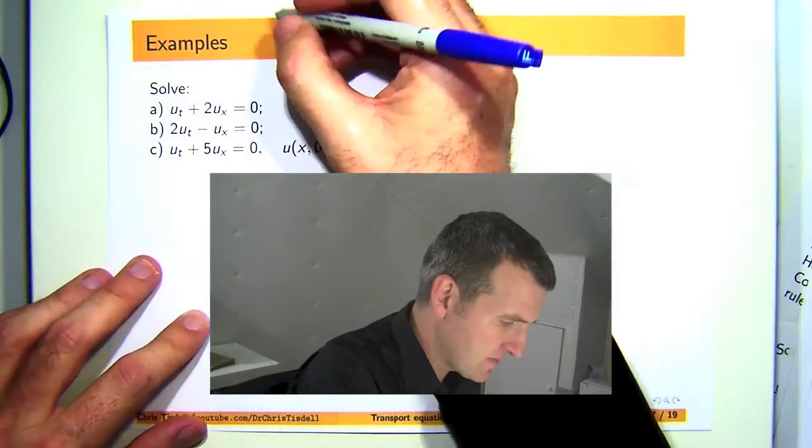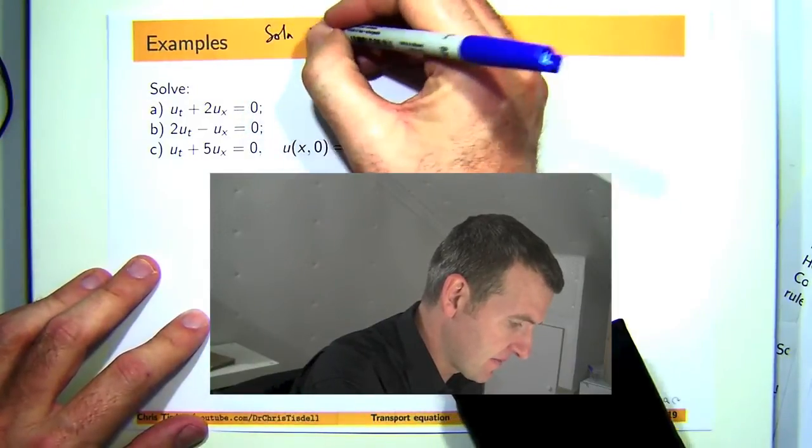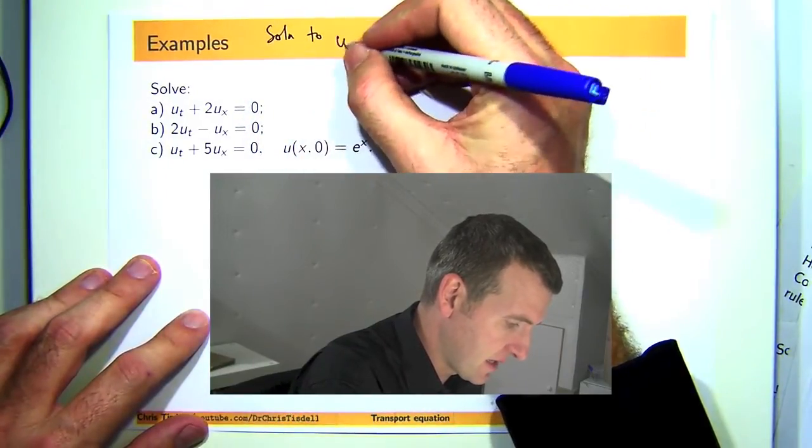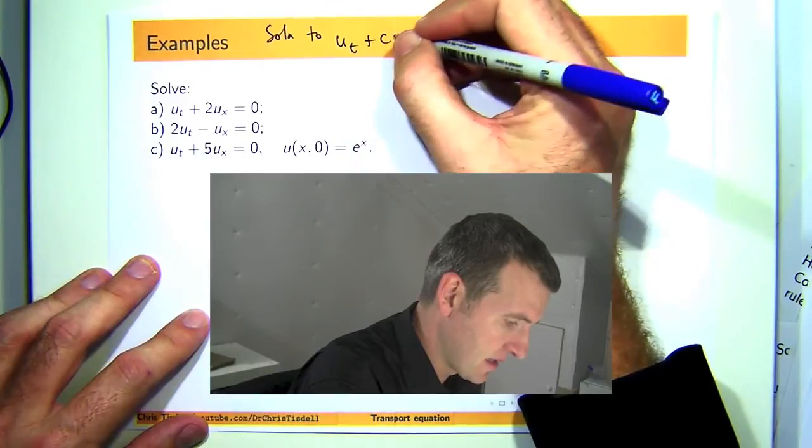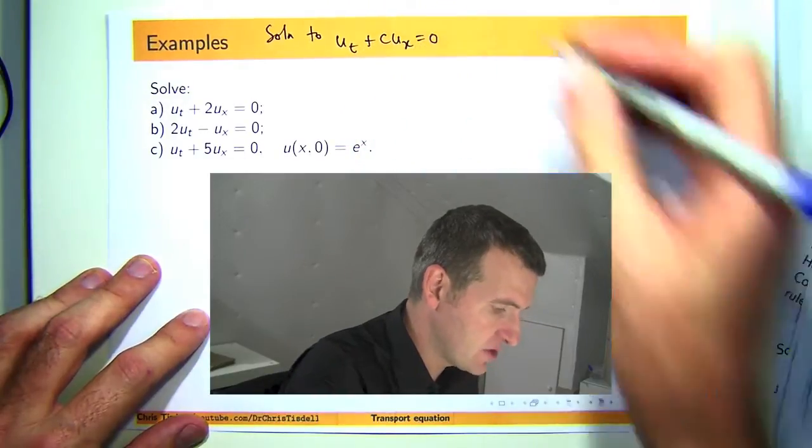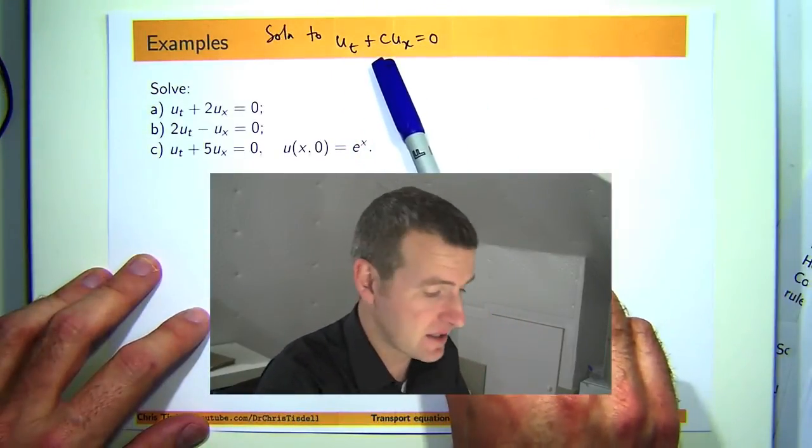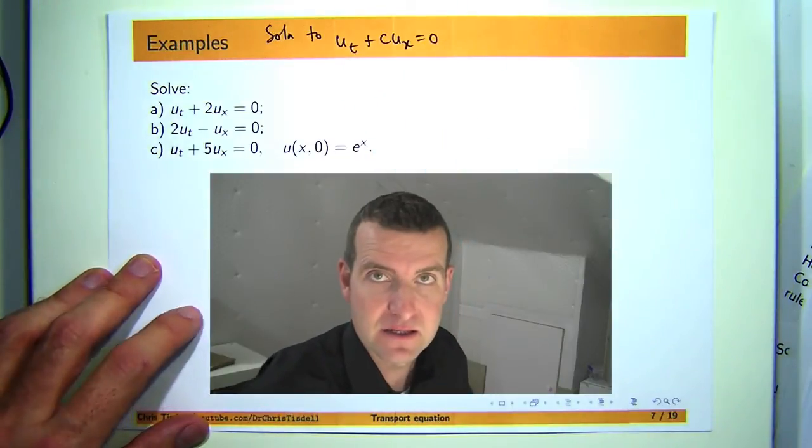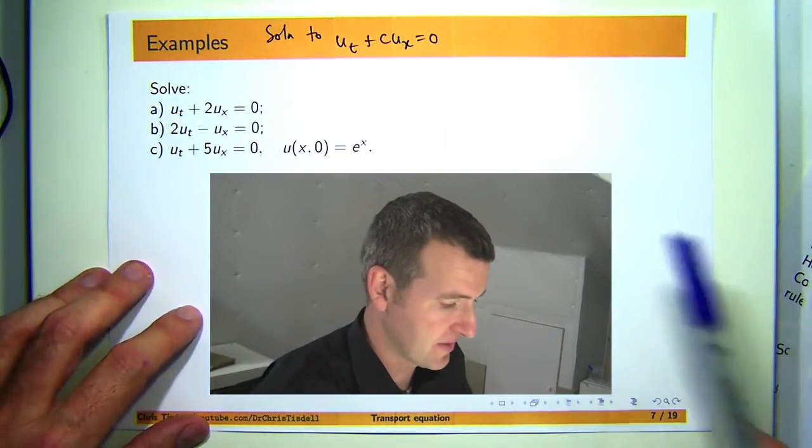Now the transport equation is the following. This is a homogeneous form, C is a constant and the subscripts mean partial differentiation.